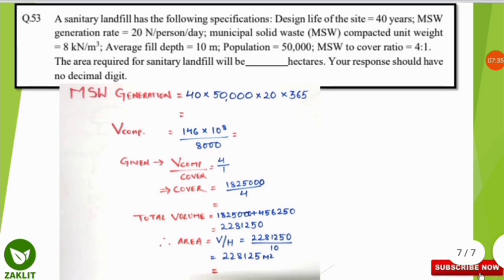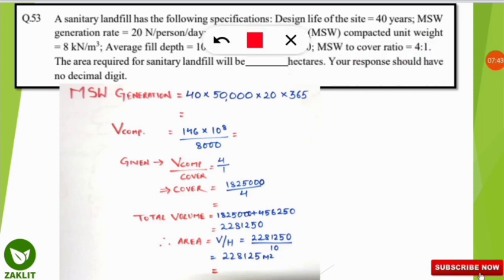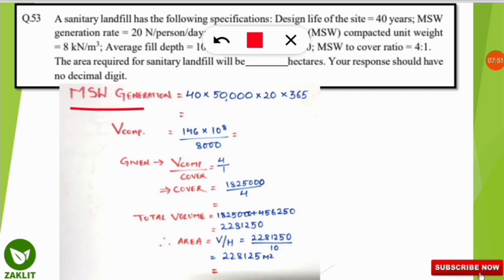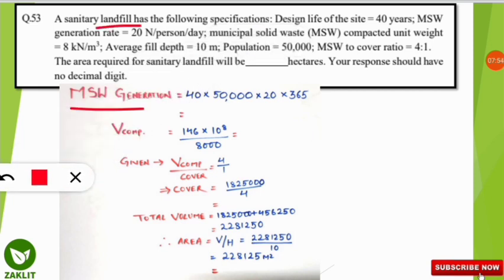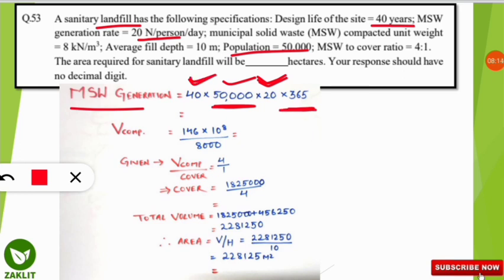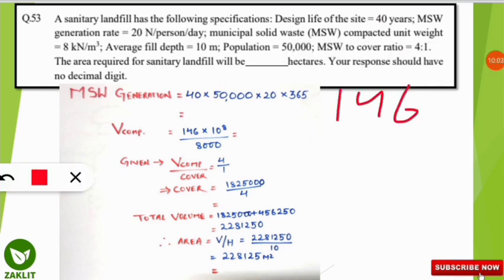First, we calculate total MSW generated over the landfill's lifetime: 40 years × 50,000 persons × 20 N/person/day × 365 days/year. This gives a value of 146 × 10⁸ Newton.